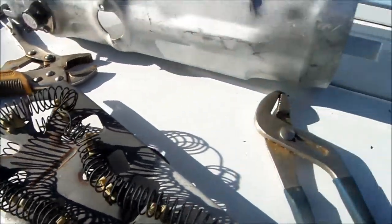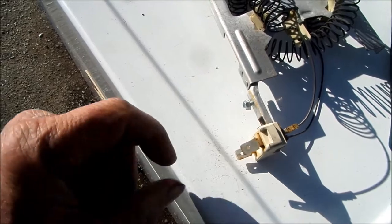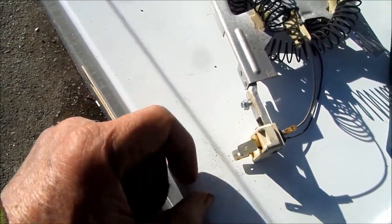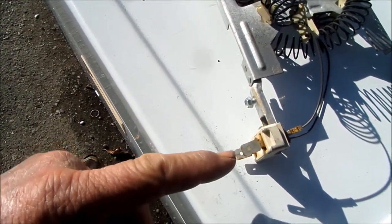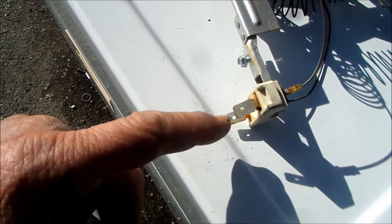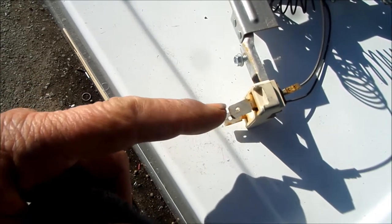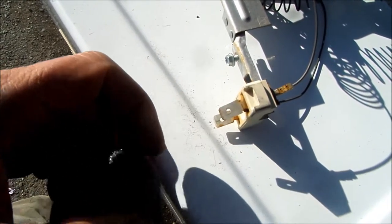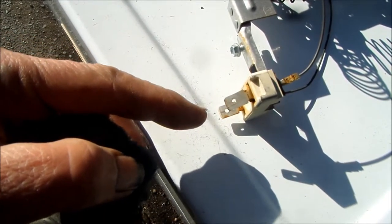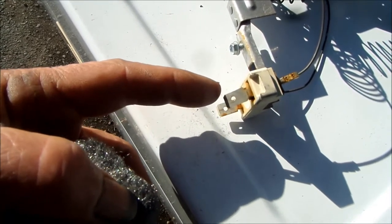So also we want to make sure that the terminals are clean here, and the spade connectors that go on are tight. Otherwise it would cause excess heat to build up on the terminals, and then normally it will toast the wire. So if you see a spade terminal that's hooked onto your terminal here that kind of looks burnt, that means basically the spade terminal is too loose for the spade here.